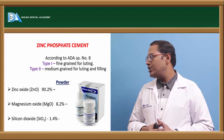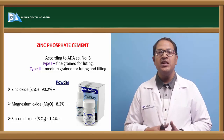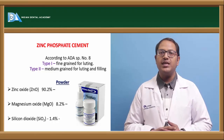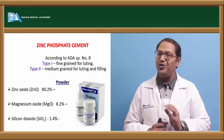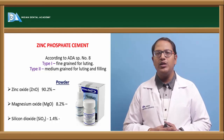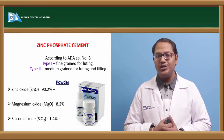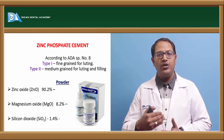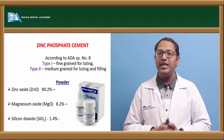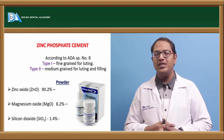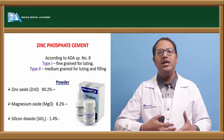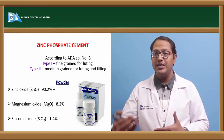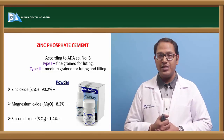Coming to zinc phosphate cement — it comprises zinc oxide and an aqueous solution of phosphoric acid. Zinc phosphate is the oldest cement available, the first luting cement used since the 1800s. It is taken as the gold standard: whatever new cement comes out, it is compared with zinc phosphate in terms of bond strength, tensile strength, pulp reaction, and acidity.